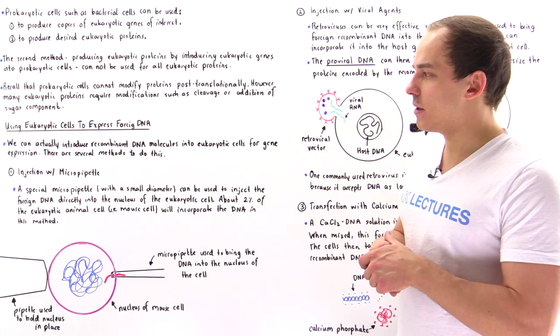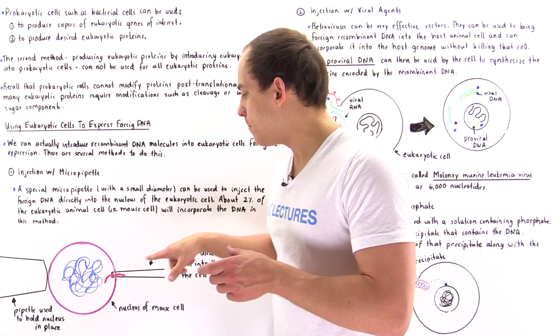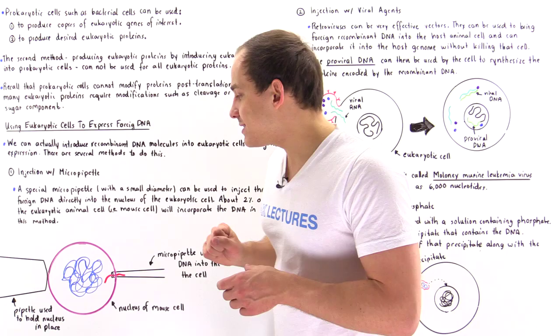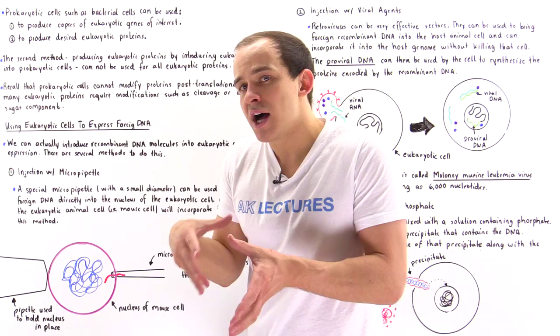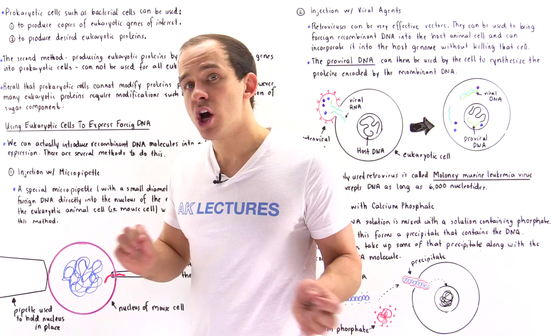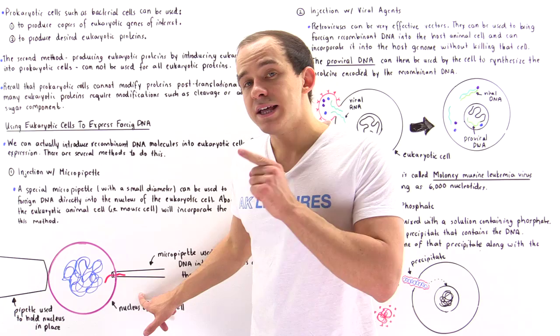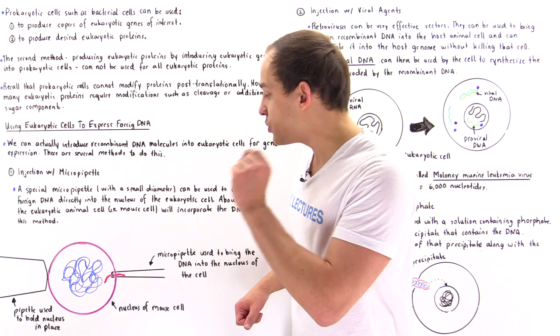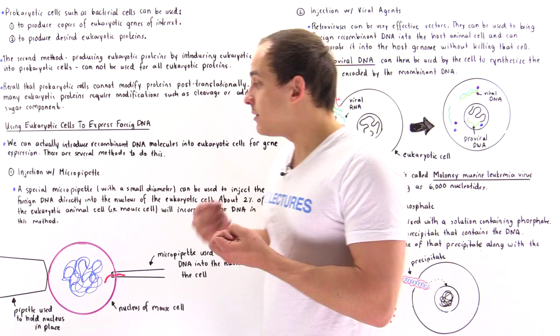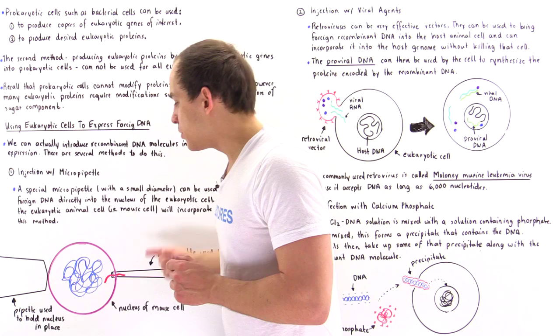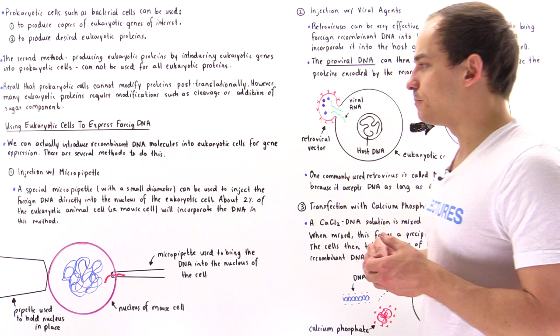For injection with a micropipette, we use a very small instrument with a very small diameter. We can hold the nucleus of the cell — let's suppose this is the nucleus of our mouse cell — on one end with a larger pipette, while at the other end we poke with a special micropipette that contains the DNA fragment we want to inject. The nucleus can then accept and incorporate that DNA molecule into its genome. In the lab, about 2% of mouse cells injected with this method will incorporate the DNA into their genome.